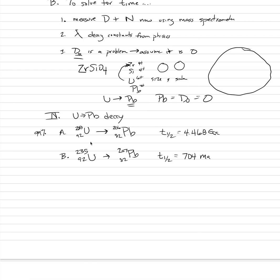Both of these decay schemes are ongoing simultaneously, and that's one of the best utilities of uranium-lead dating. We can get an age from the first decay scheme and then another age from the second decay scheme at the same time — and they had better equal one another. This gives uranium-lead an internal consistency test within itself.